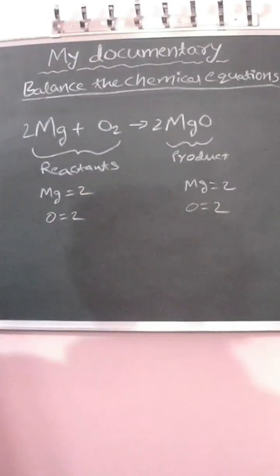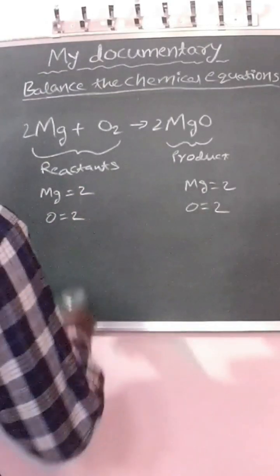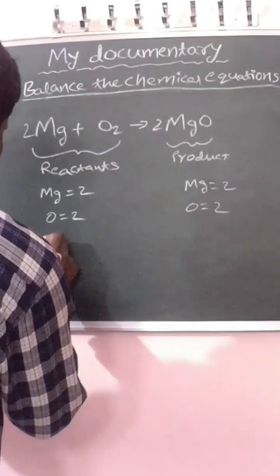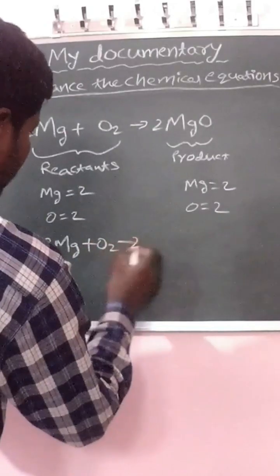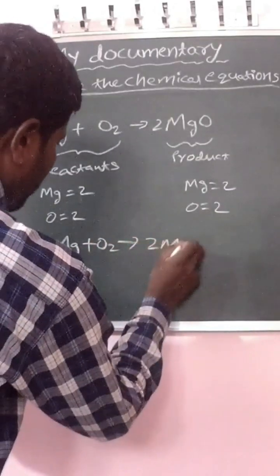Therefore, the number of atoms are balanced on both sides. Therefore, the balanced chemical equation is 2Mg plus O2 gives us 2MgO.